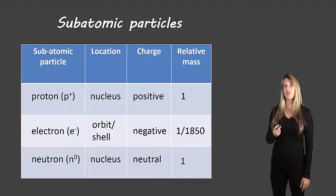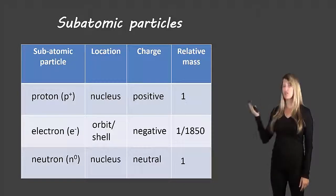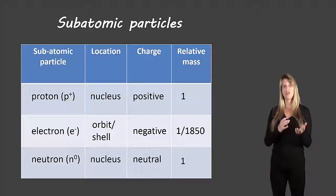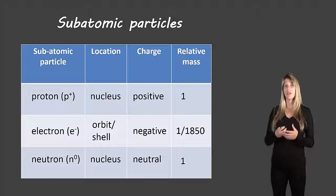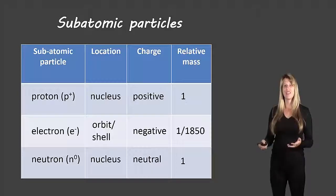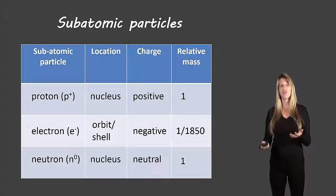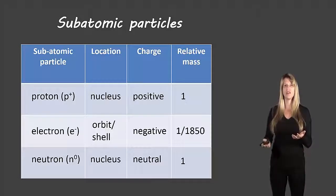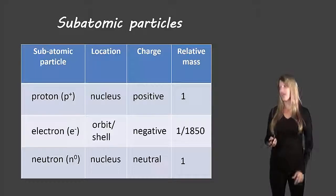Now if we take a look at the relative mass, you can see protons and neutrons have relative mass of one. That means they're approximately the same mass as each other. Electrons on the other hand are about one over one thousand eight hundred and fifty. That means it takes one thousand eight hundred and fifty electrons to have the exact same mass as just a single proton or a single neutron. So they're much much less in mass.